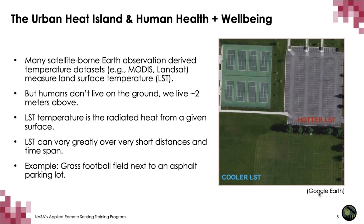Throughout this RSET training, you've probably become familiar with land surface temperature. Land surface temperature is measured by many Earth observation platforms, including MODIS and Landsat, and it is a measure of the radiated heat off the surface. But humans don't live exactly on the surface of the planet — rather one or two meters above. Land surface temperature can vary greatly over short distances and short time spans. Air temperature, specifically 2-meter air temperature, is a much better indicator of heat stress that can affect our health and well-being.